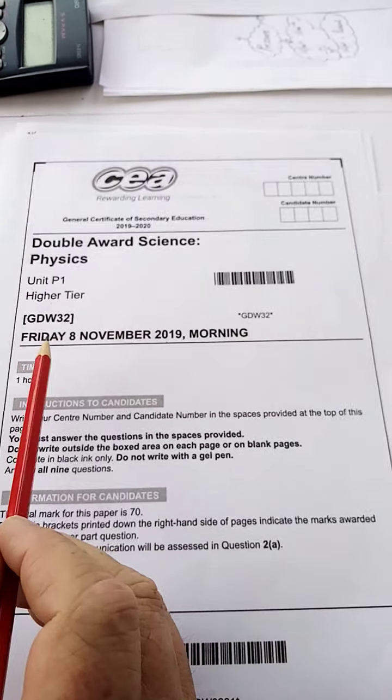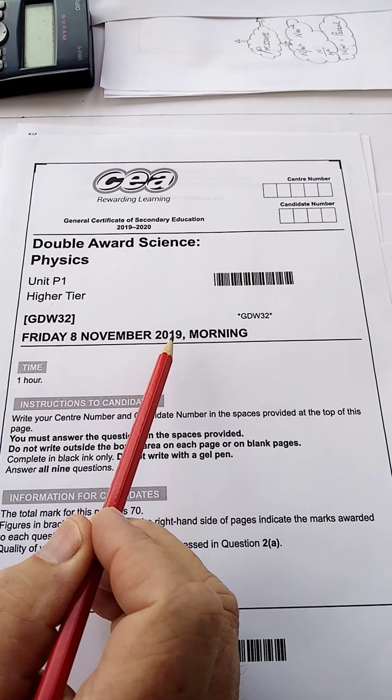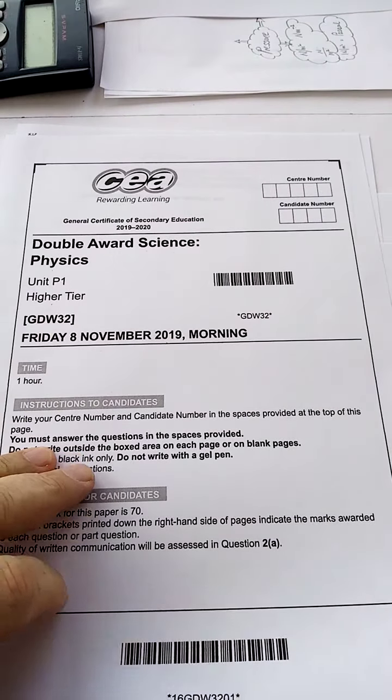I'm just going to look at 2b here, 8th of November 2019, higher tier paper 1. I'm just going to look at 2b and it's talking about half-life and I just want to talk about half-life, T subscript half.